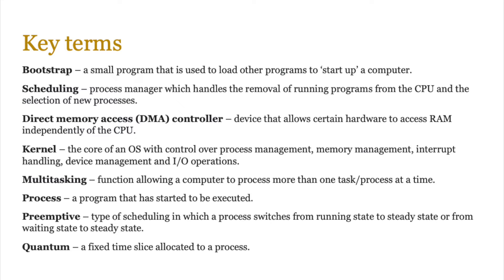An operating system has a core called the kernel. The kernel operates like an access controller — it controls process management, memory management, interrupt handling, device management, and I/O operations for applications. If an application wants to access any of these, it has to go via the kernel.